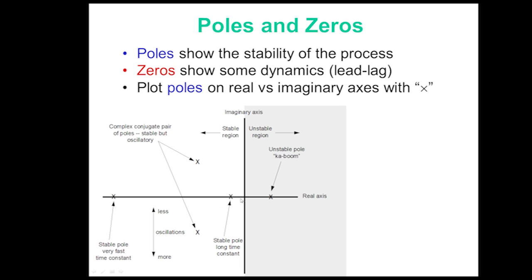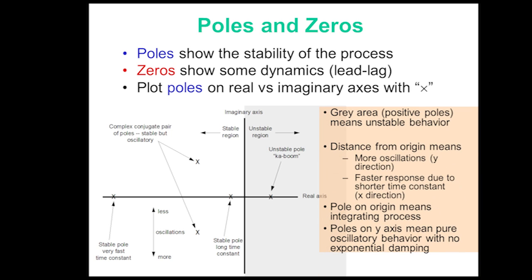Poles that are very far away from the axis are going to be very fast, with very little and short-lived influence on the system. Something closer to the origin is going to be nearly an integrating process or have a very long time constant or time to steady state. The gray area is the unstable area, and oscillatory systems have imaginary components.